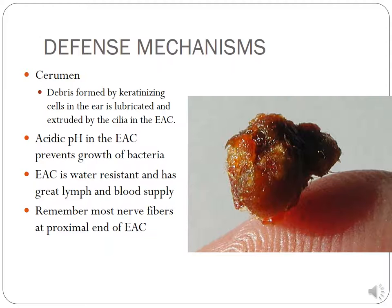Another defense mechanism is cerumen. Debris is formed by keratinizing cells in the ear, lubricated and pushed to the external auditory canal by cilia. The pH in the external auditory canal is very acidic, preventing bacterial growth. It's water resistant, has lymph and blood supply, and is very protective. Importantly, most nerve fibers are at the proximal end of the external auditory canal, so keeping the otoscope at the very distal end should not be uncomfortable for the child.